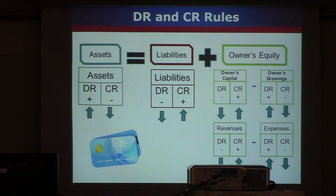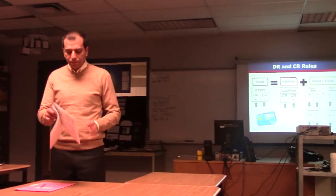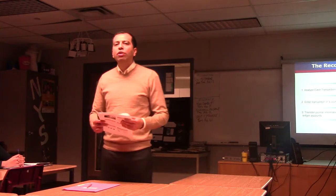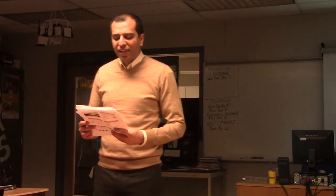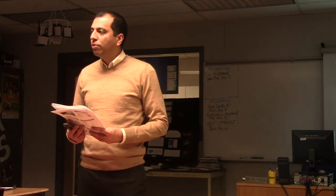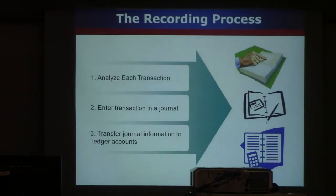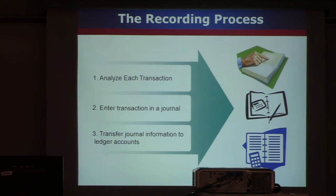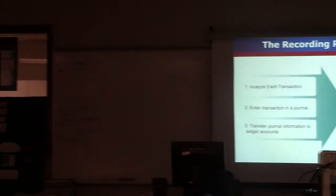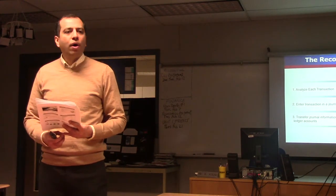Debits and credit rules are listed right here, and I ask you to memorize and understand them as we go along in the course. So how do we use these debits and credits? We use them to record transactions. The recording process has three steps: you analyze each transaction, you enter the transaction in a journal, and you transfer the journal to the ledger. Journal, ledger, transaction, and analysis are new words, but as we go through the course you'll understand what they mean and why we use them.